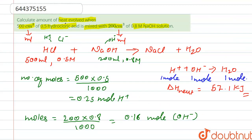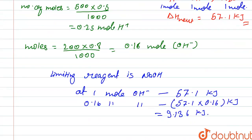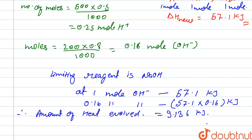So the amount of heat evolved is 9.136 kJ. Thank you.